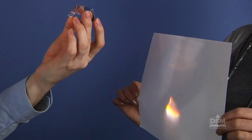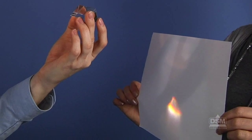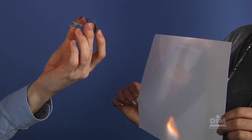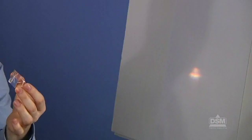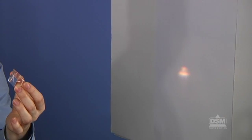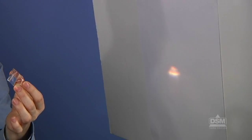Then hold the paper still and turn the prism so that the patch of light moves across the paper. Finally, hold the prism still, tilt the paper, and watch what happens to the patch of light.